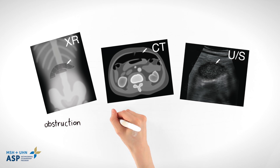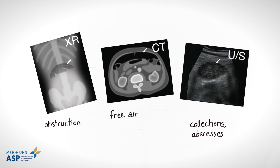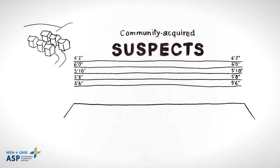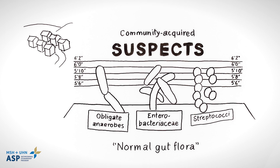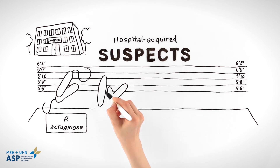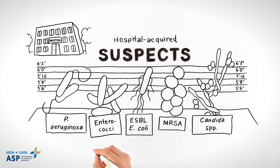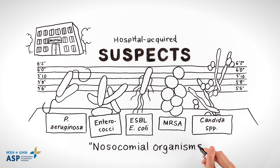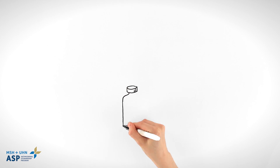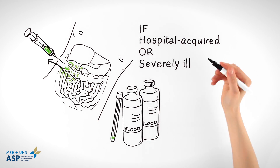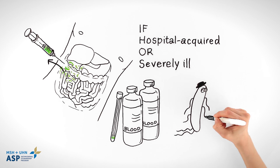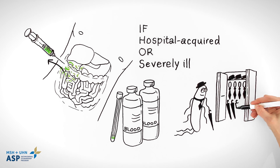Imaging studies are useful to visualize sites of infection. Community-acquired peritonitis is caused by normal gut flora. In hospital-acquired peritonitis, also consider difficult-to-treat nosocomial organisms. Cultures are only recommended in hospital-acquired infections or severely ill patients, as gut flora are relatively predictable.